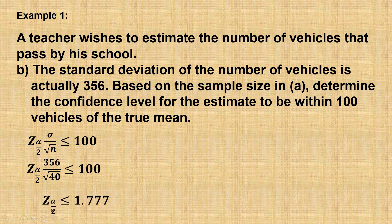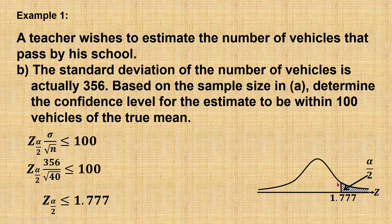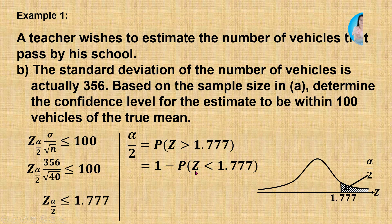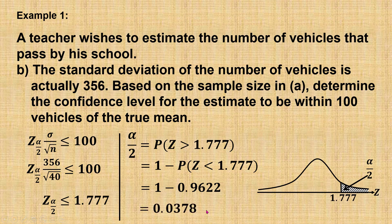When I calculate, the z value of alpha over 2 is less than or equal to 1.777. Looking at the diagram, when z value is 1.777, the shaded region is the value of alpha over 2. That is, alpha over 2 is the probability when z is greater than 1.777. P(Z > 1.777) equals 1 minus P(Z < 1.777). From the normal table, P(Z < 1.777) is 0.9622. Therefore, alpha over 2 is 0.0378.